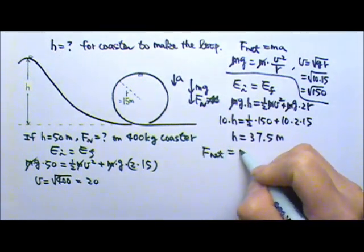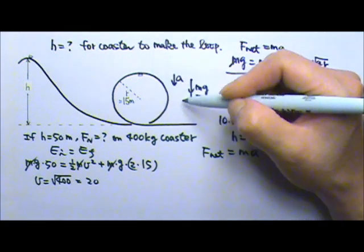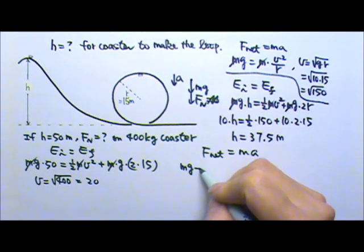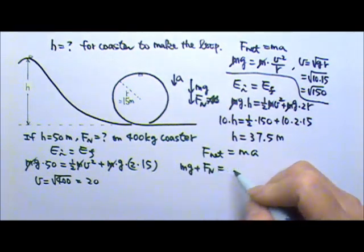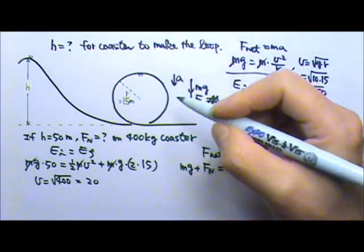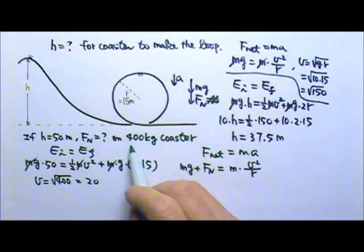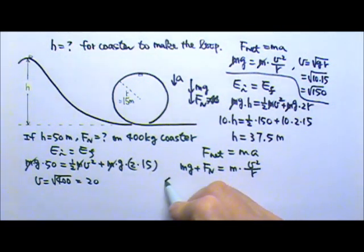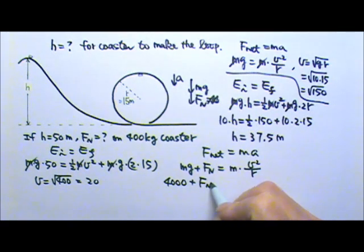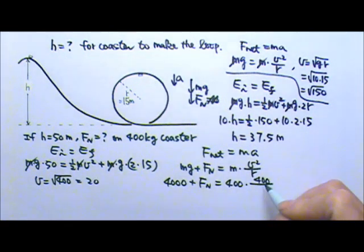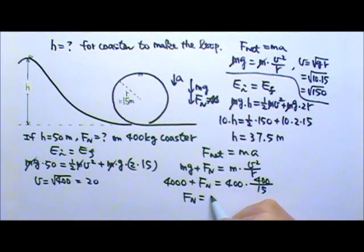So when we write the net force equals ma, the net force will be these two added together. They're in the same direction. They help each other. So I have mg plus normal force. They work together. That's m times again centripetal acceleration v² over r. Now the mg for 400 kg coaster will be 4000 plus the normal force equals 400 times v². And this will give us the normal force 6667 newtons.